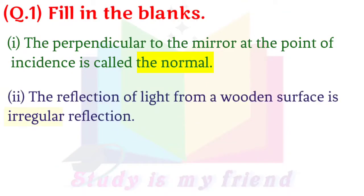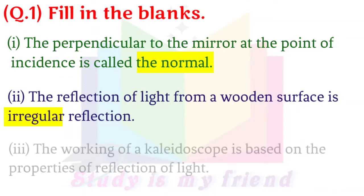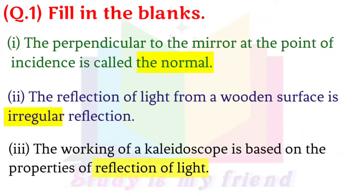2. The reflection of light from a wooden surface is irregular reflection. 3. The working of a kaleidoscope is based on the properties of reflection of light.